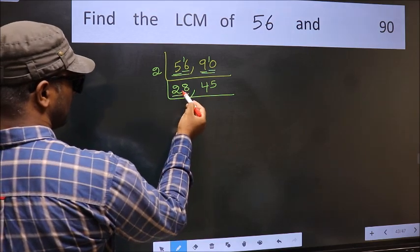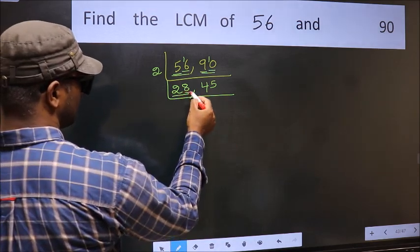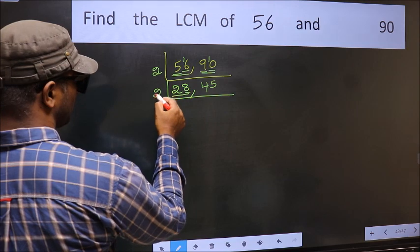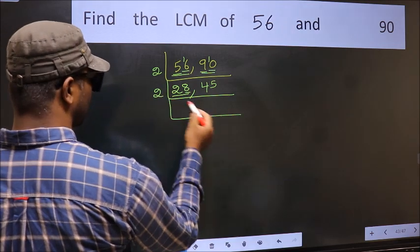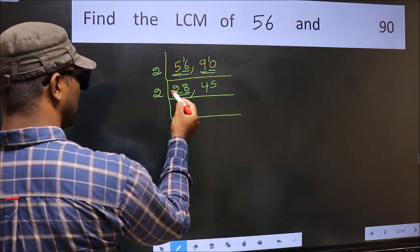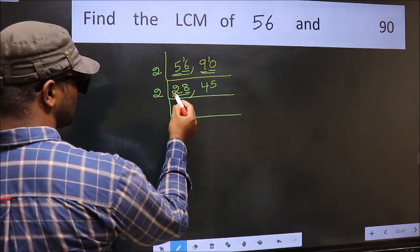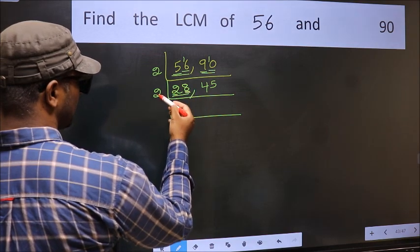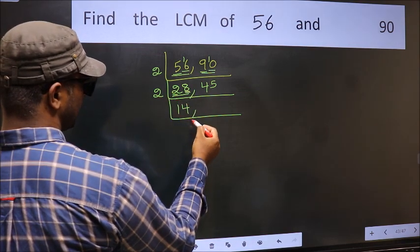Now here we have 28. The last digit is 8, so take 2. The first digit is 2; when do we get 2 in the 2 table? 2 ones are 2. The other number is 8; when do we get 8 in the 2 table? 2 fours are 8.